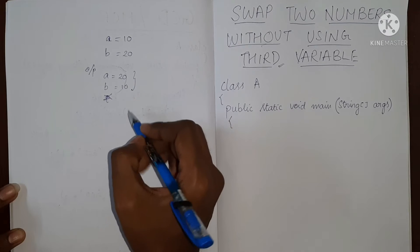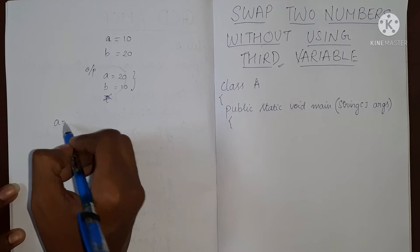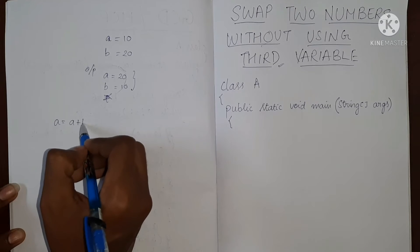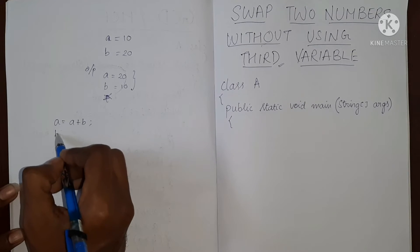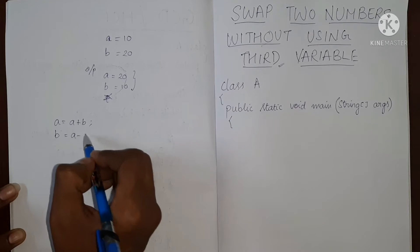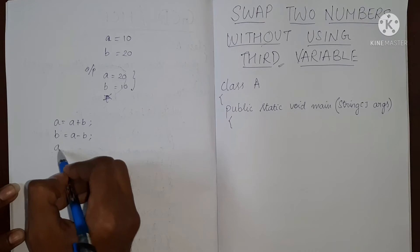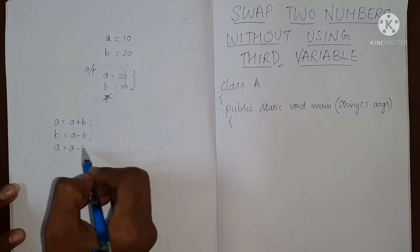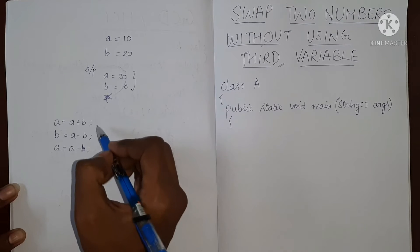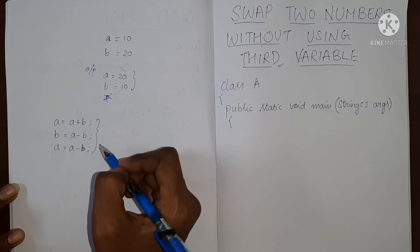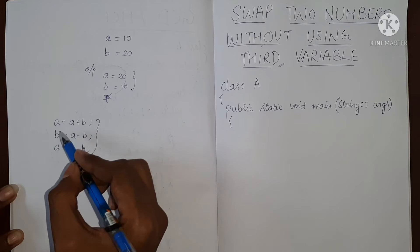So we are going to do a equal to a plus b, and then b equal to a minus b, and a equal to a minus b. If we do these three steps, we are actually swapping the values of a and b.